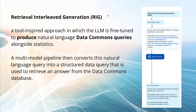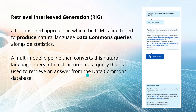They present two ideas: the RIG model — Retrieval Interleaved Generation — and the RAG model. The RIG model is a tool-inspired approach in which the LLM system is fine-tuned by Google to produce natural language Data Commons queries alongside statistical data. You have your RIG system, fine-tuned by Google, and when you ask a question about renewable energy use in the world, the system generates sub-questions and queries the Data Commons database, which returns correct answers from the global truth database. This multimodal pipeline converts a natural language query into a structured data query — that is why they call it Retrieval Interleaved Generation.